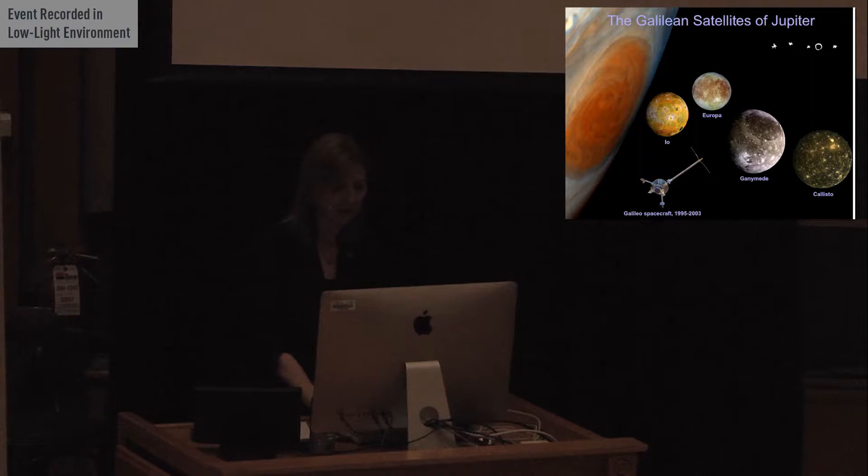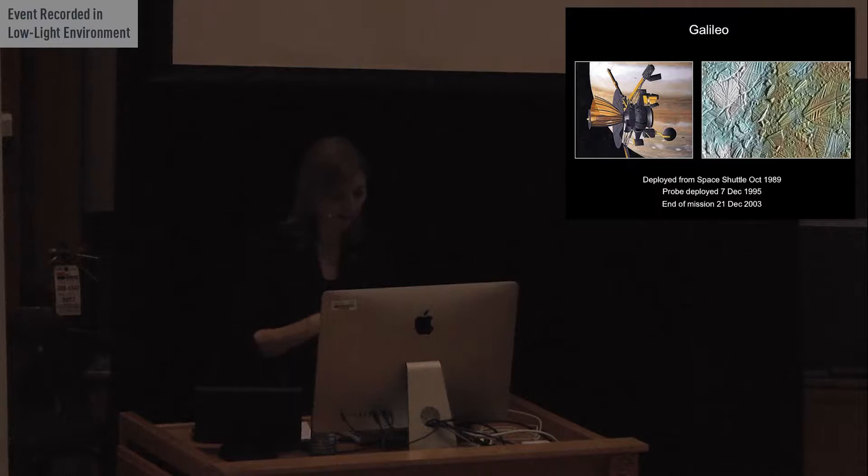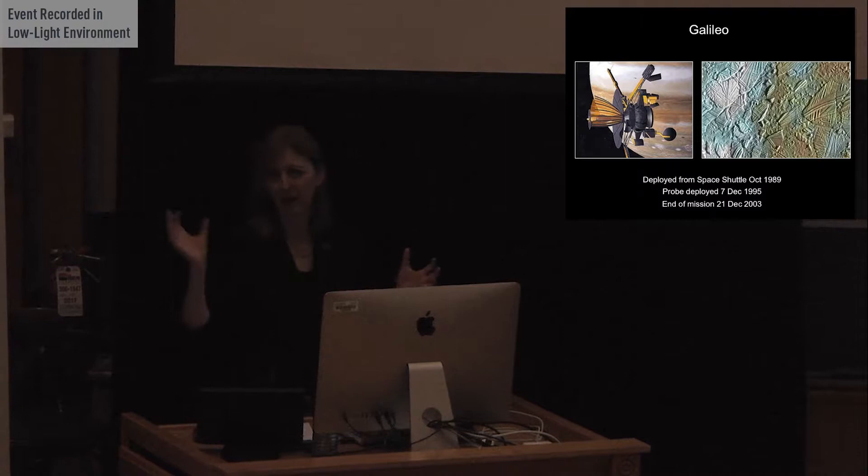But Voyager paved the way for the Galileo mission. And what we know about Europa now really came from that mission. So the Galileo spacecraft had several issues. It eventually launched from the space shuttle in 1989, but it almost didn't launch at all. It had a lot of problems leading up to the launch. One reason was the Challenger disaster that pretty much grounded everything for several years. There were also financial problems with Galileo.